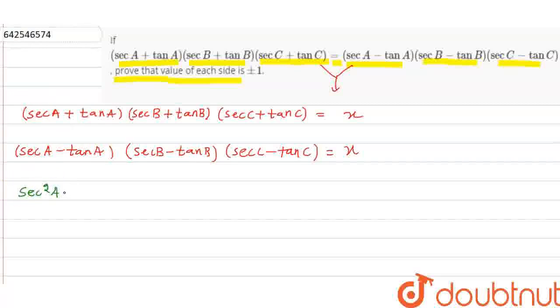That means sec square A minus tan square A into sec square B minus tan square B into sec square C minus tan square C is equal to x square. We know that, what we do?